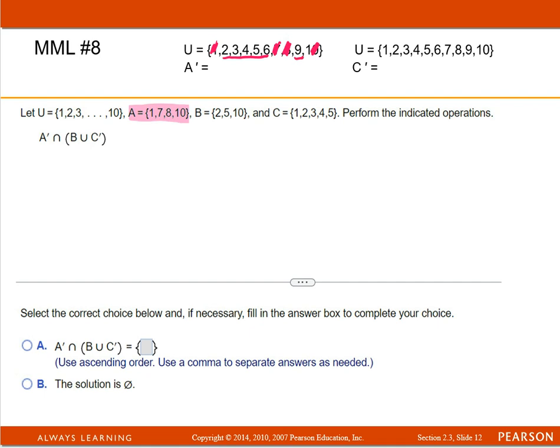And then all of these numbers are what A prime would be. So A prime is gonna be the set of 2, 3, 4, 5, 6, and 9.